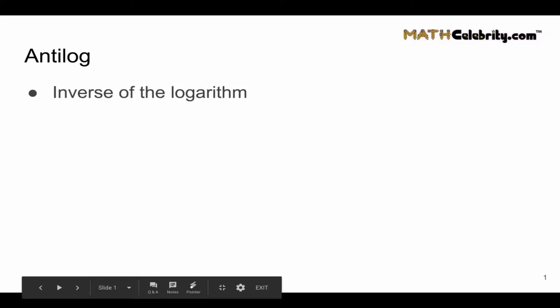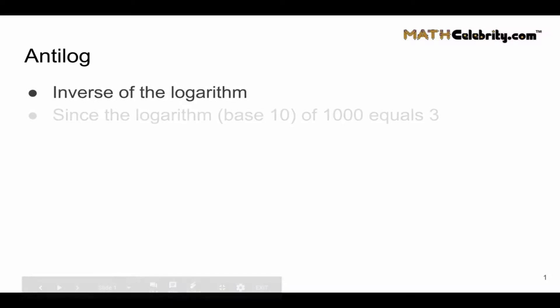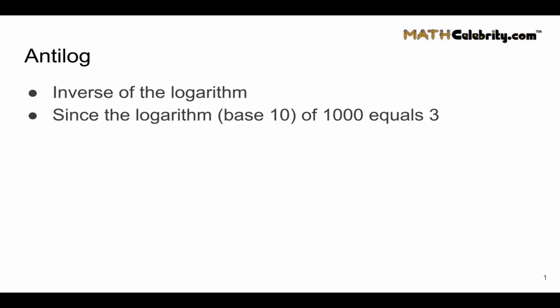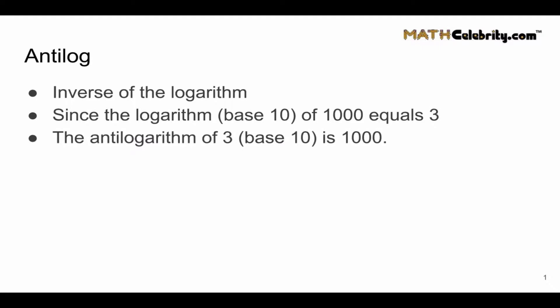Let's start with what is an antilog. It's the inverse of the logarithm. So if you have a logarithm base 10 of a thousand equals three — that is, 10 raised to the third power equals a thousand — that's your regular logarithm. But if you want to take the antilog of 3 base 10, that is a thousand, because 10 raised to the 3 is a thousand. So we want to undo the log — we start with a thousand and we're working backwards.